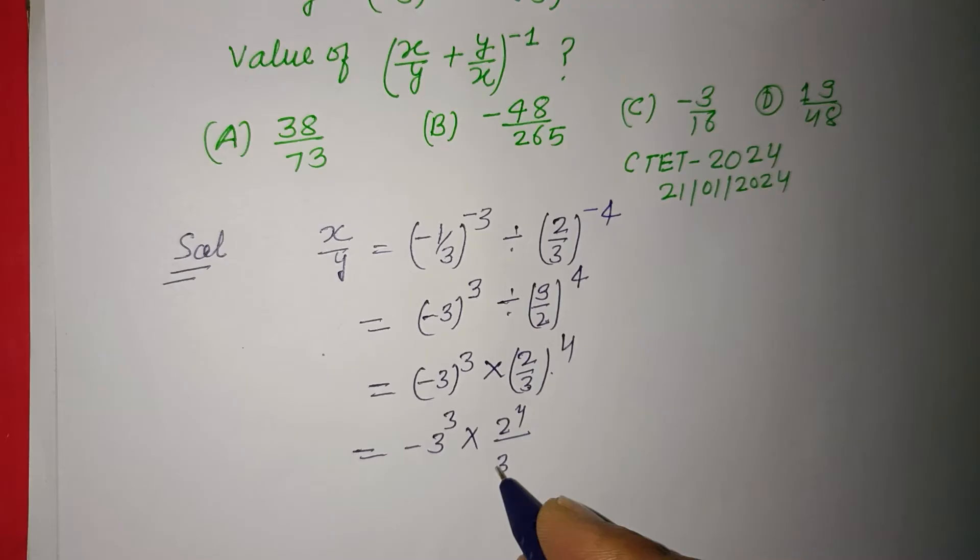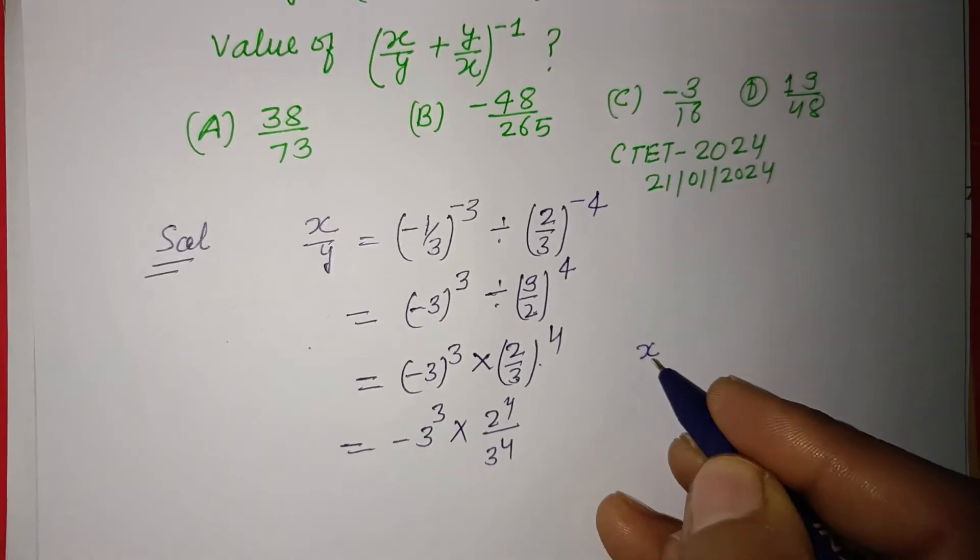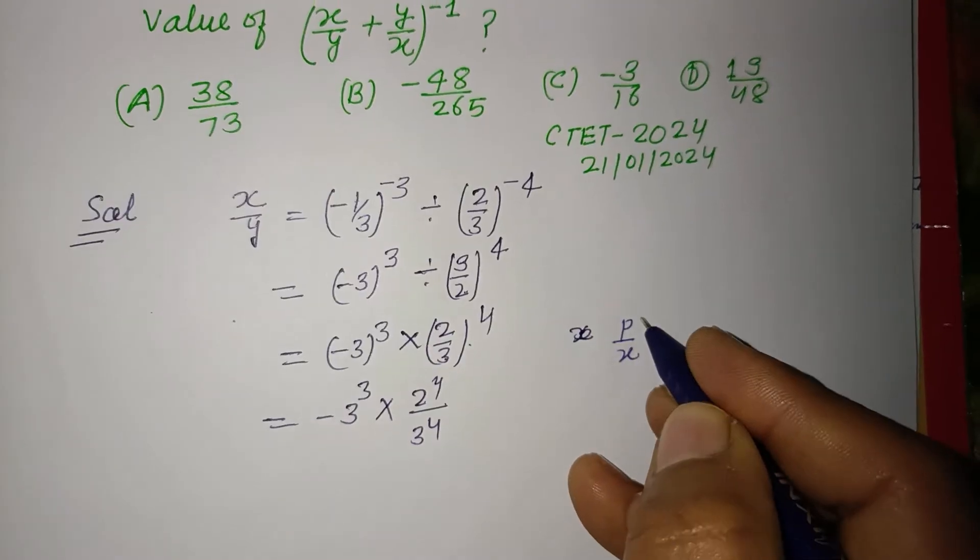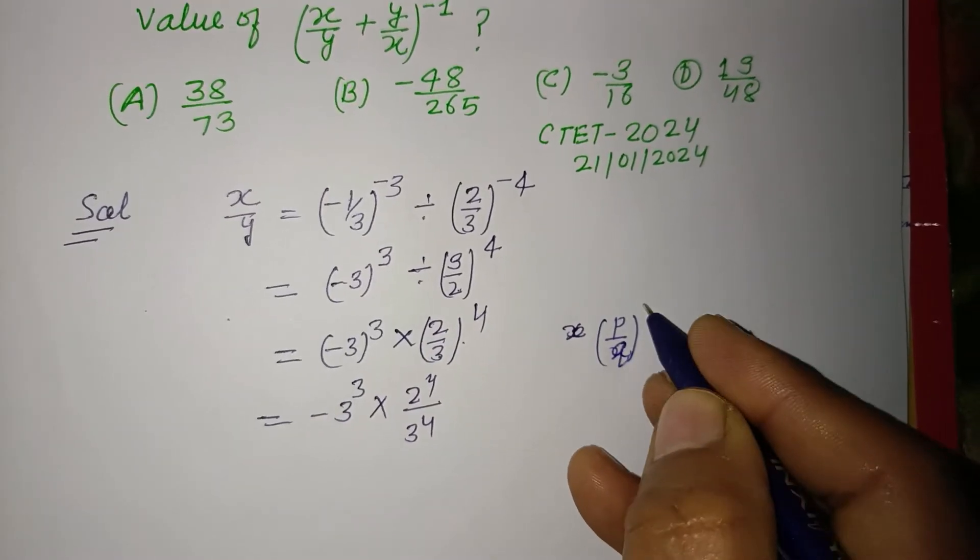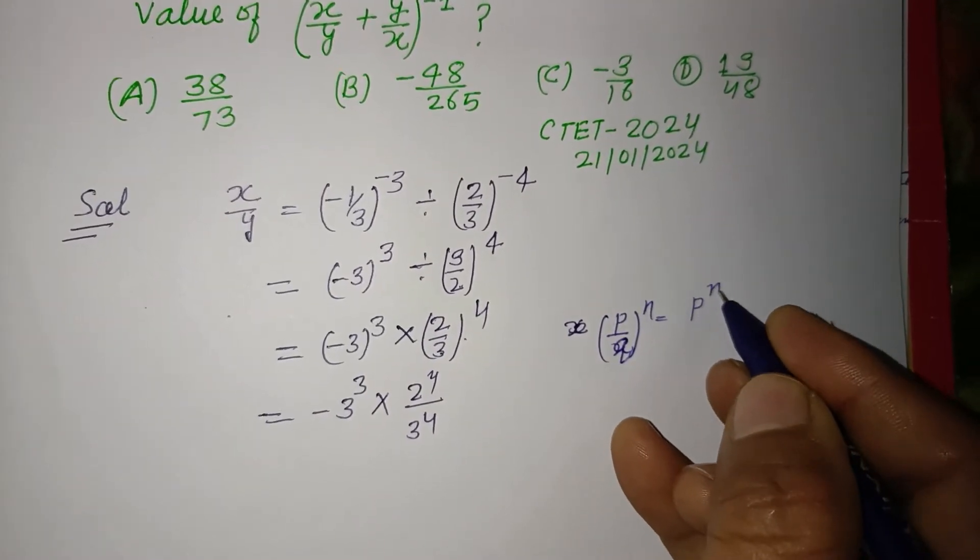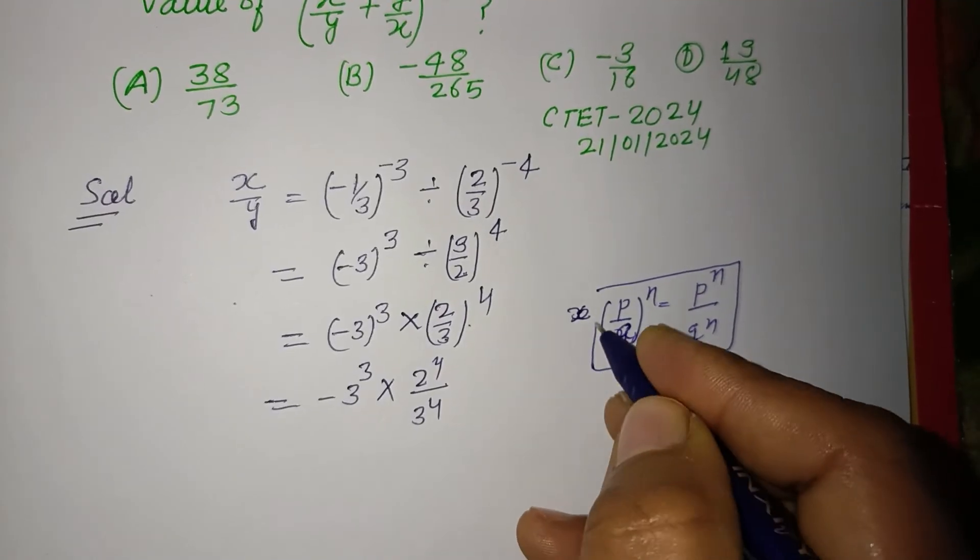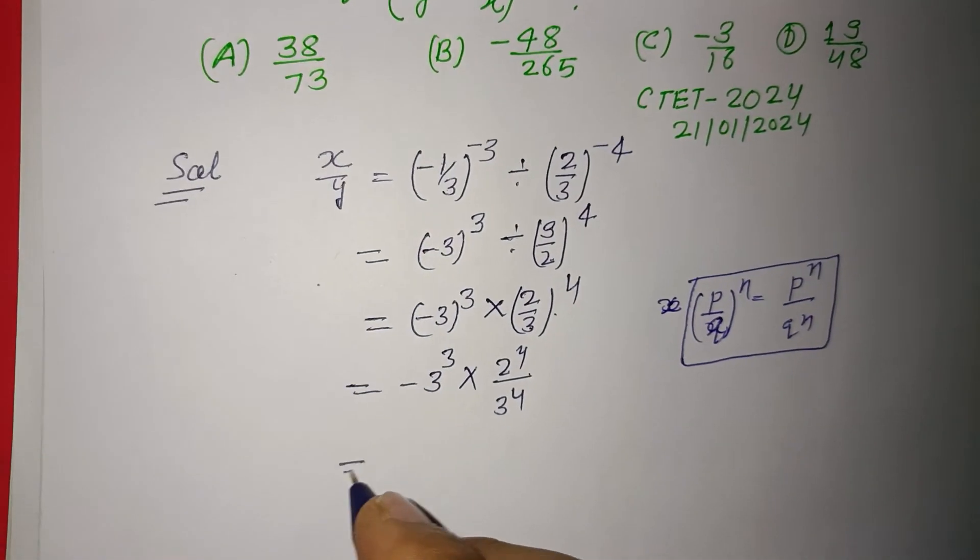Because here (P/Q)^n, it can be written as P^n and Q^n. This is the formula of exponent.